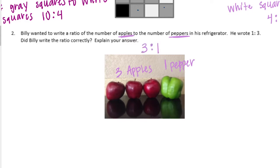What does Billy have? Billy wrote one to three. So we would say no, he did not write it correctly.